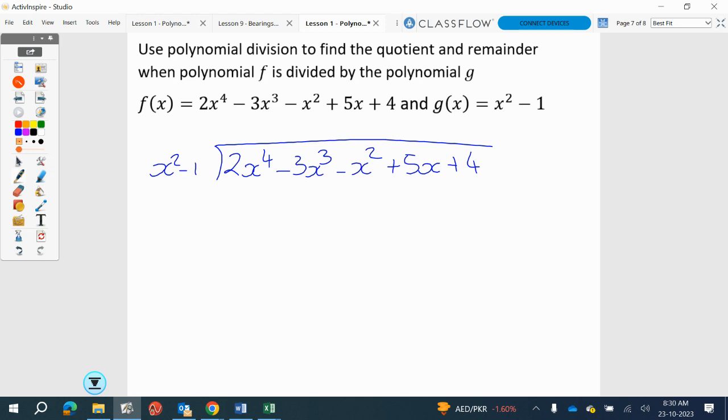So I asked myself what do I multiply x squared by to get 2x to the four? 2x squared. So 2x squared times this is going to give me 2x to the four. 2x squared times minus 1 gives me minus 2x squared, so I'm going to write it here.